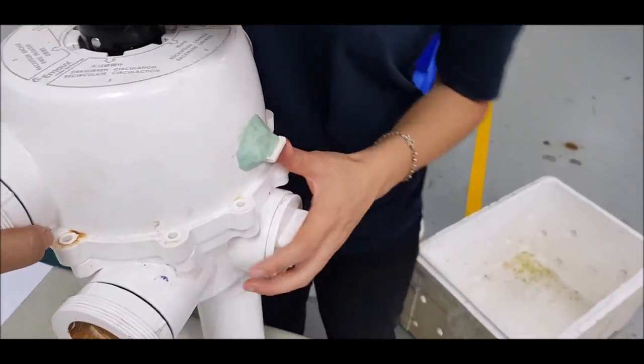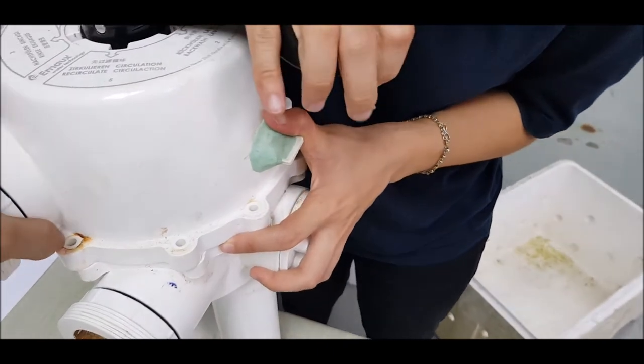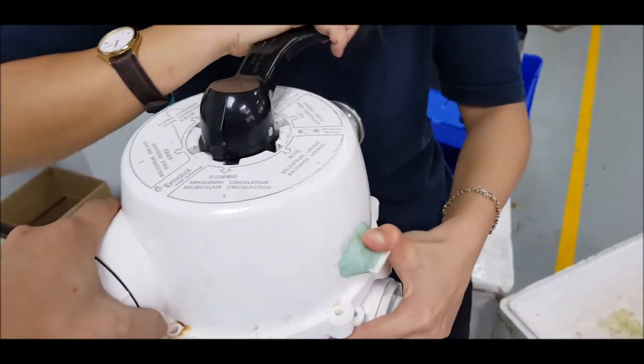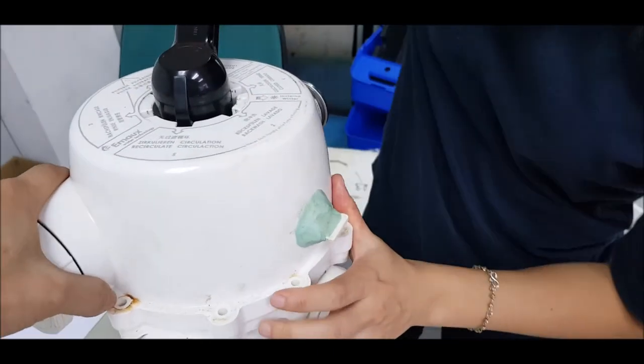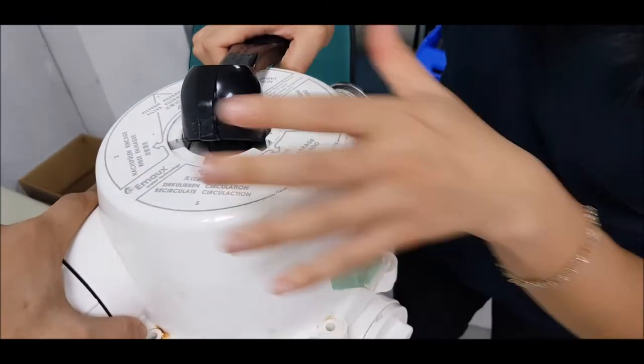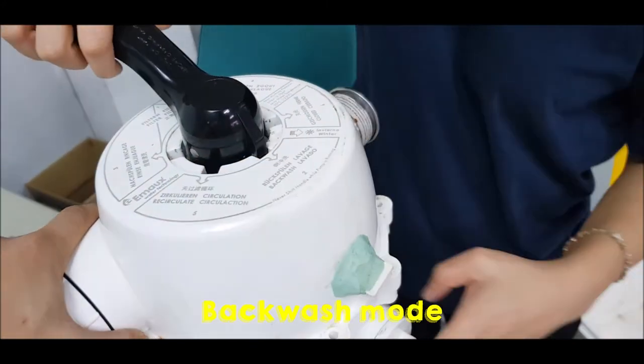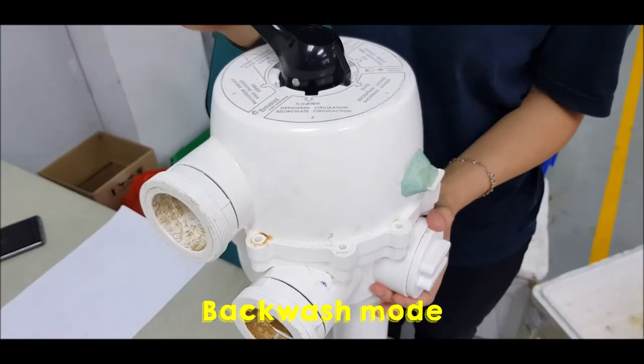If we change it to backwash, what actually happens? We just turn the knob, which changes the sealing face of the valve. Just a little bit more. Changing it into backwash mode and we take a look and see.